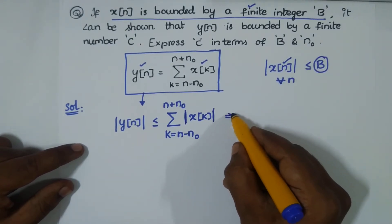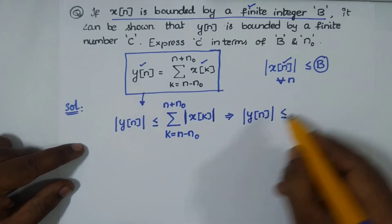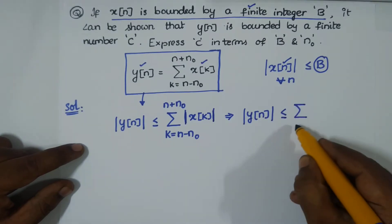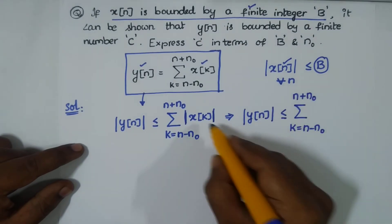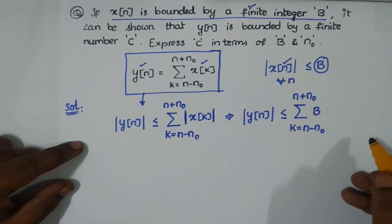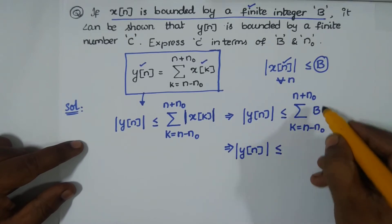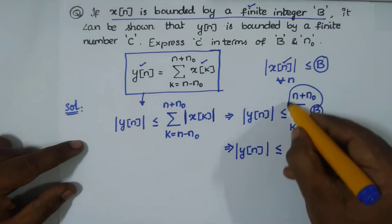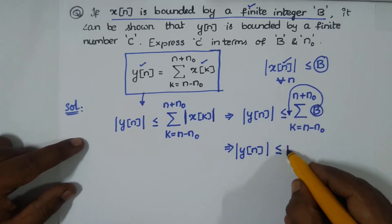Absoluteness applied over input again. Already we have this: whether it is x[n] or x[k] or x[l] doesn't matter with the indices, the quantity must be B. Therefore, |y[n]| equals the summation from k = n minus n₀ to n plus n₀ of |x[k]|, which is bounded by B. Now we don't have any k associated with this B, so I can bring B outside.